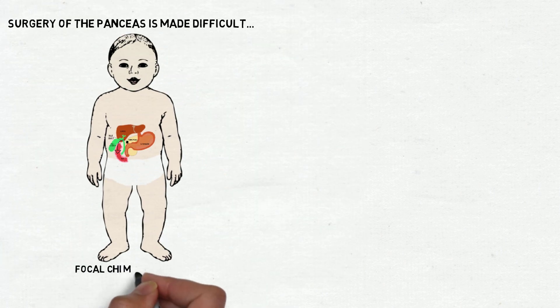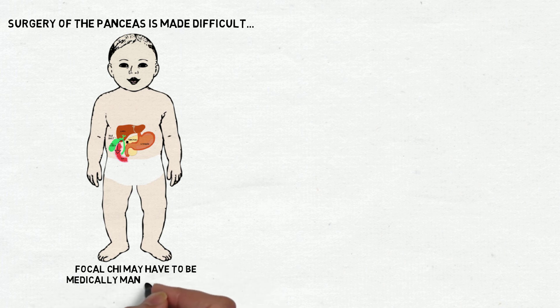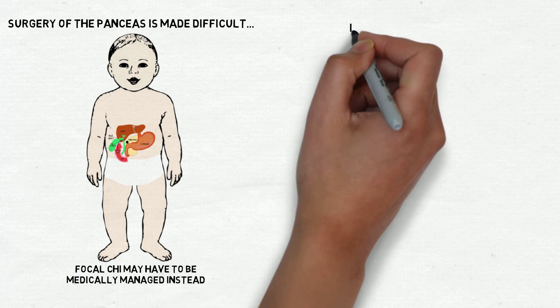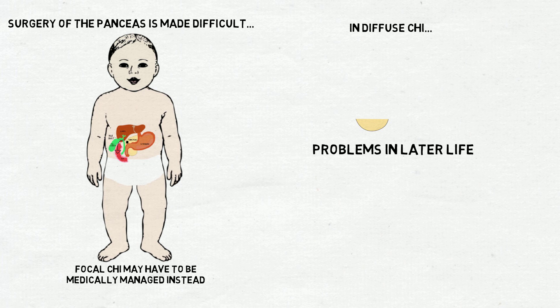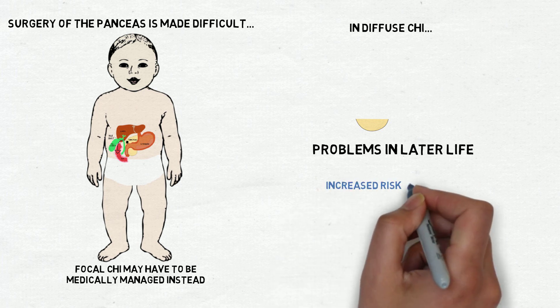In such cases, focal CHI may have to be medically managed instead. In diffuse CHI, removing most of the pancreas can cause problems in later life, such as an increased risk of diabetes.